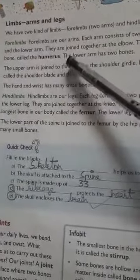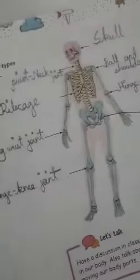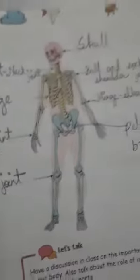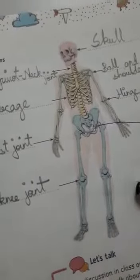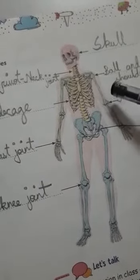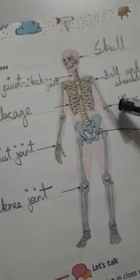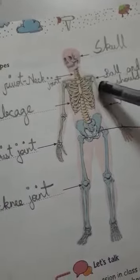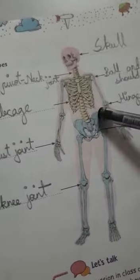Forelimbs are our arms. Let's see the diagram of the skeletal system. Looking at the arms, each arm consists of two parts. Here you can see the elbow joint.